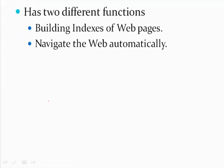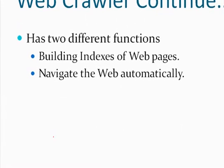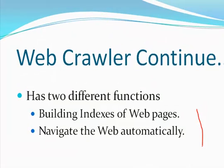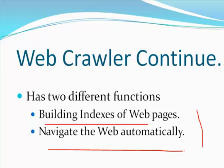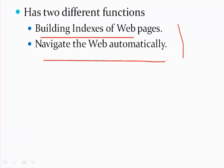A web crawler has two different functions: building indexes of web pages and navigating the web automatically. Building indexes means it has to go from one document to the next, looking at each particular document. Navigating the web automatically is important because the web is changing continuously, both in terms of size and the lifetime of a web page.